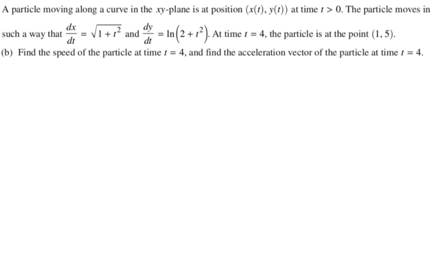Find the speed of the particle at time t equals 4, and find the acceleration vector of the particle at time t equals 4. So we're doing two parts here. They almost always put these two things together. I'm not really sure why. I guess they think people confuse them or something. I'm not sure. Anyway, speed. So speed is going to be, I mean, it's the magnitude of velocity, if that's how you think about it.